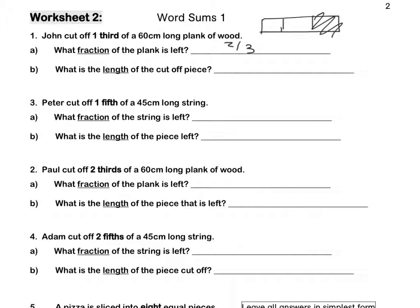What is the length of the cut off piece? One third of 60cm is 20cm, because 60 divided by 3 is 20. Pause this video to complete Question 1 and Question 2 by yourself.